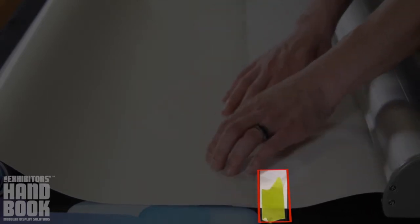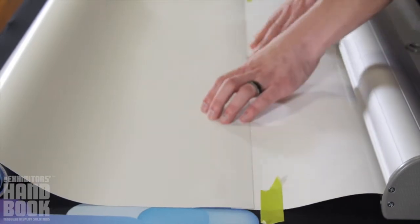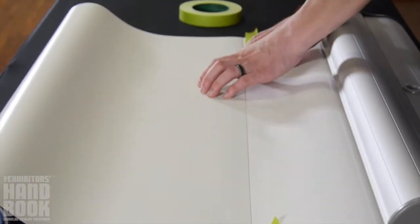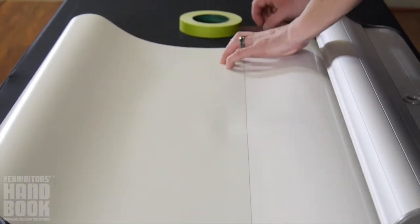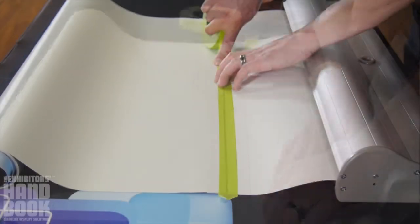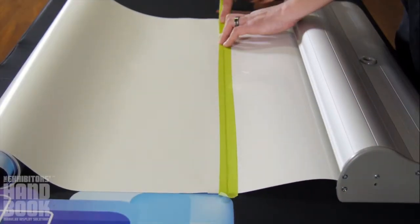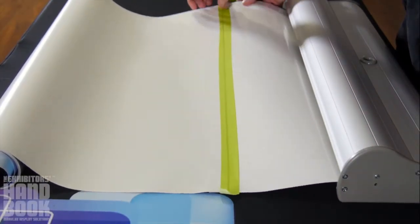Once aligned, carefully peel back the protective coating and slowly join with the graphic. Apply pressure to ensure a solid attachment. Prior to retracting the graphic into the base, place a strip of masking tape across the seam for additional security.